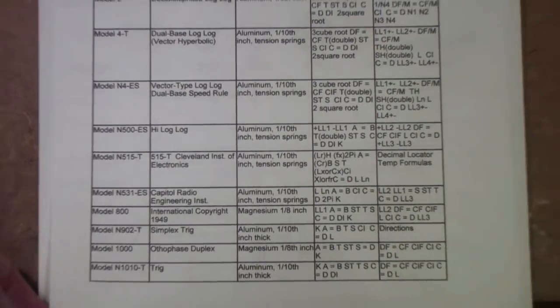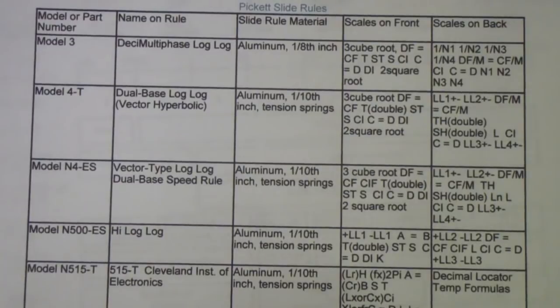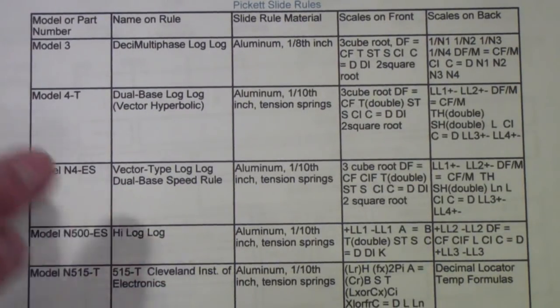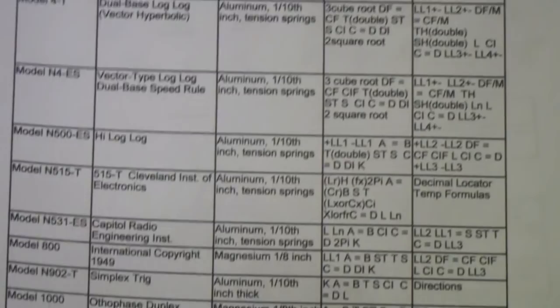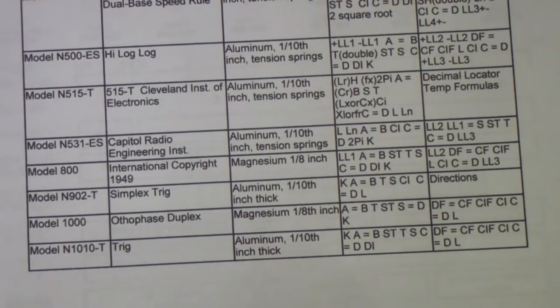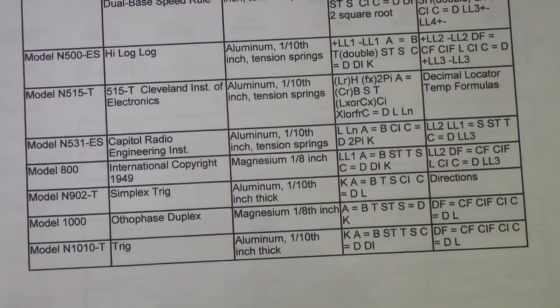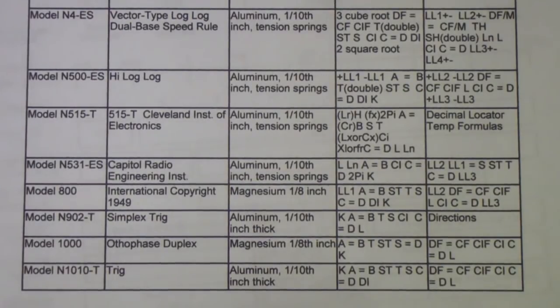There are ten slide rules in all. They vary from a model 3, which is one of the series from which the model 4 and the N4 were developed. These are the large, wide slide rules that you saw first. I should point out that if it has an N in front of it, that means that it's what Pickett regarded as a new rule, which means it's the latter part of their slide rule production. I think they started using the N around 1960.